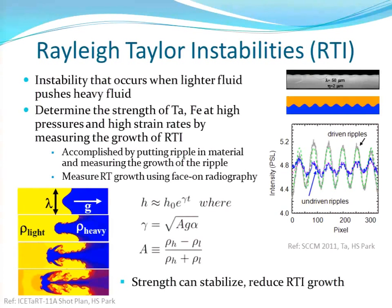This slide summarizes what Rayleigh-Taylor instabilities are. The main thing to take from this is that it's an instability that occurs when a lighter fluid pushes a heavier fluid. You can see one of our samples with the ripples on it — showing the initial ripple and the intensity of the ripples at the end of the experiment. If we can increase the strength, then we can suppress this growth.